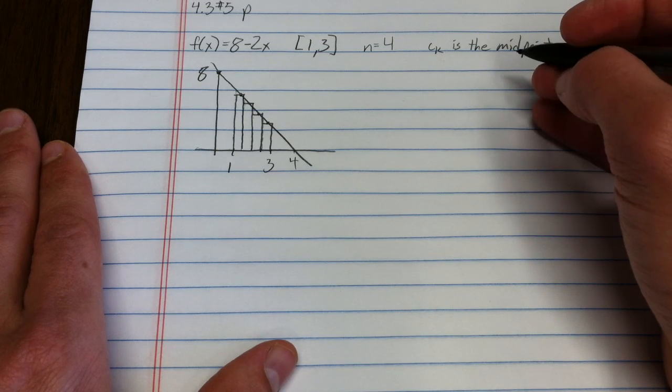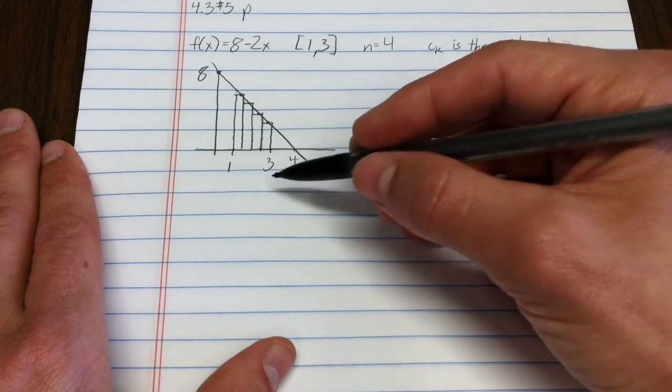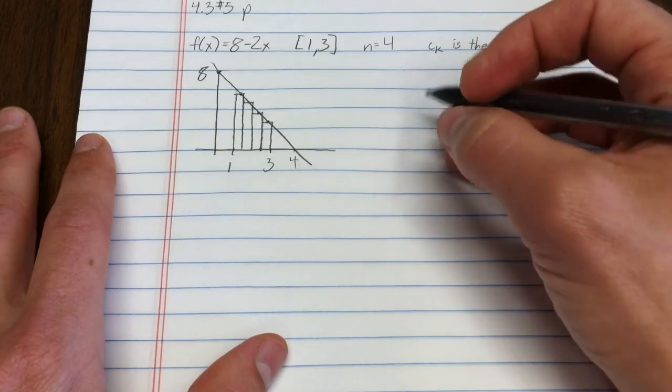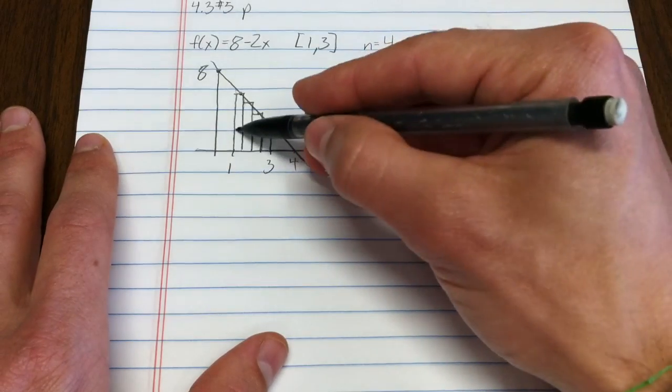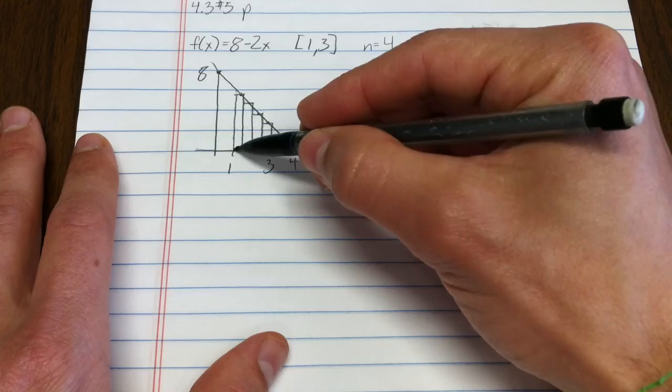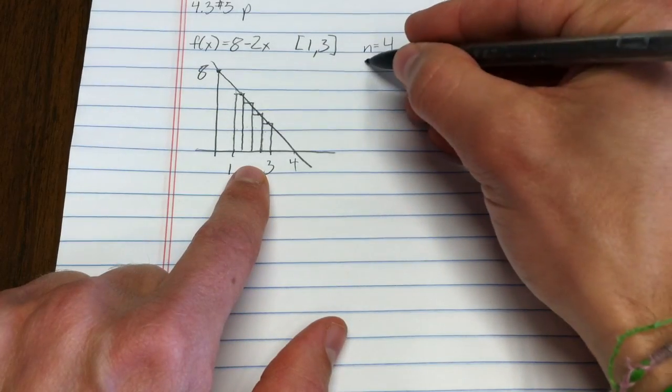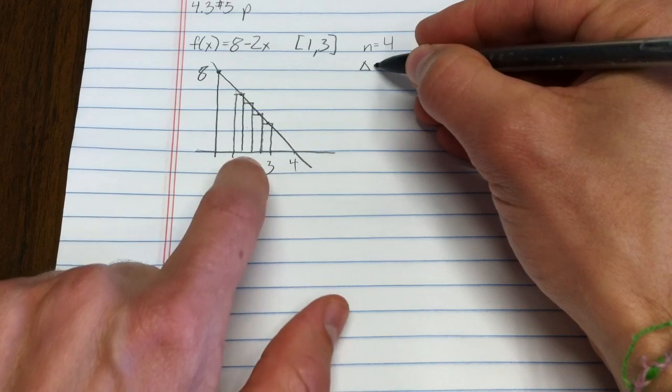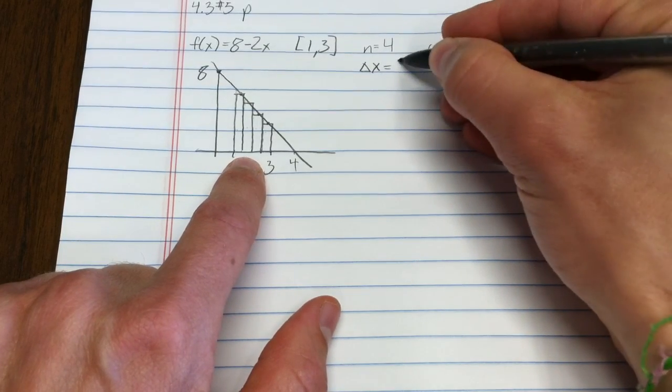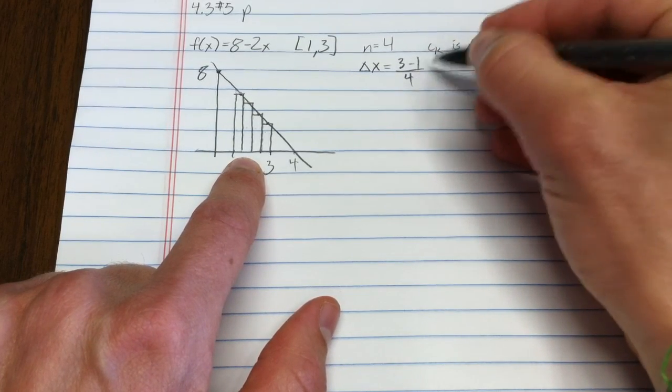So I have sketched the graph, sketched the rectangles, and now I'm supposed to find the approximate area. Now each of these I'm supposed to do the height times the base. And first off, formally, I already sort of did it. But delta x, notice that's 3 minus 1 over 4, or 1 half.